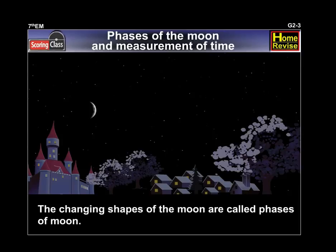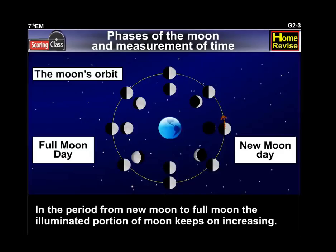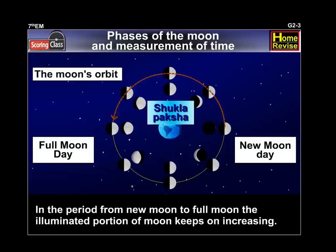The changing shapes of the Moon are called phases of Moon. In the period from New Moon to Full Moon, the illuminated portion of the Moon keeps on increasing. This is called Shukla Paksha.